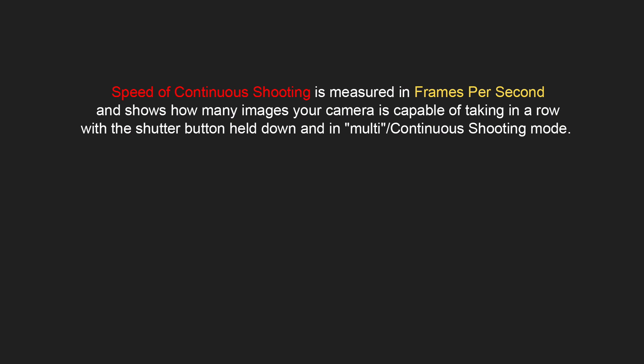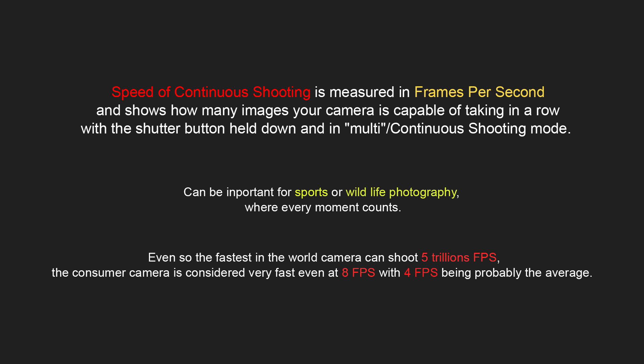Now let's talk about camera performance. First we will talk about speed of continuous shooting. Speed of continuous shooting is measured in frames per second and shows how many images your camera is capable of taking in a row with the shutter button held down in multi-continuous shooting mode. This can be important for sports or wildlife photography where every moment counts. Even though the fastest camera in the world can shoot 5 trillion frames per second, a consumer camera is considered very fast even at 8 frames per second, with 4 frames per second being probably the average.